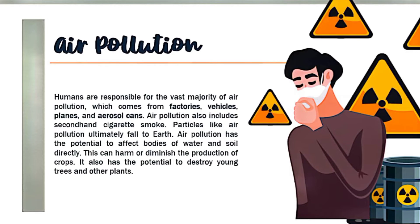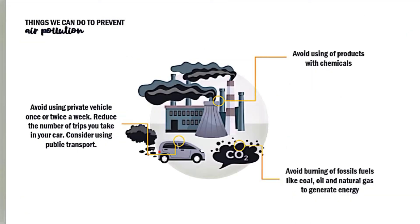Air pollution also includes second-hand cigarette smoke. Particles from air pollution ultimately fall to earth, and air pollution has the potential to affect bodies of water and soil directly. This can harm or diminish the production of crops and also has the potential to destroy young trees and other plants. To prevent air pollution: first, avoid using private vehicles once or twice a week, reduce the number of trips you take in your car, and consider using public transport.